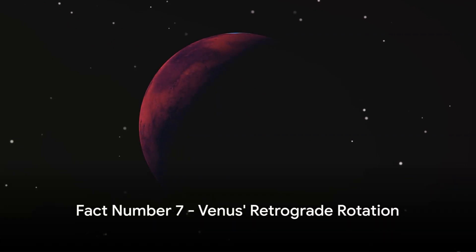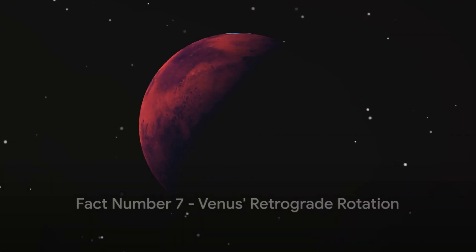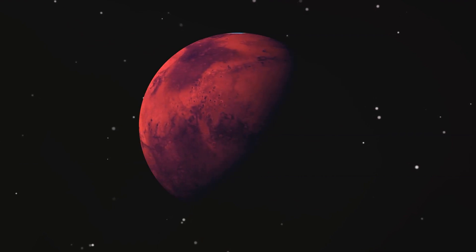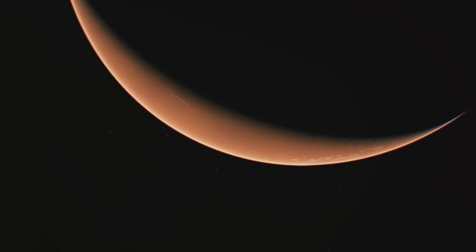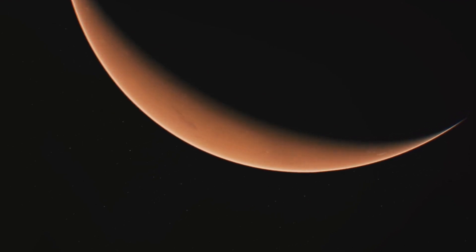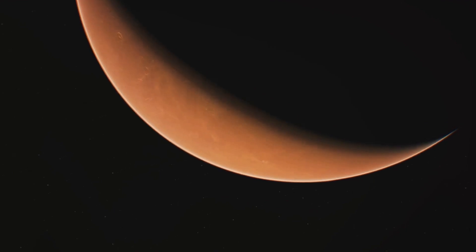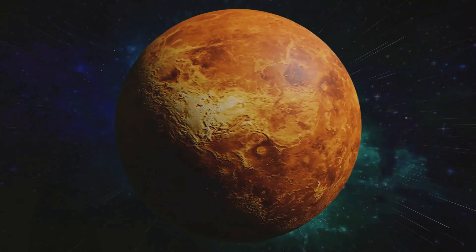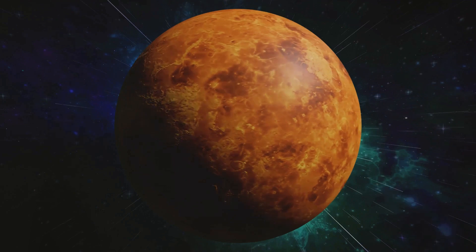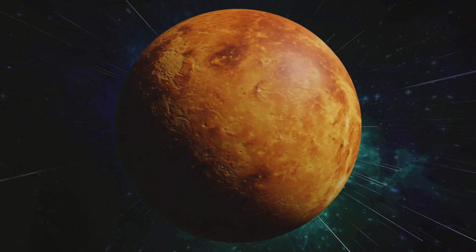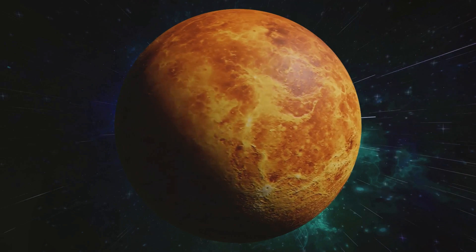Fact number 7 takes us deeper into Venus's peculiarities with its retrograde rotation. Now you may be wondering, what does retrograde rotation mean? In astronomy, most planets spin on their axis in the same direction they orbit the Sun, a motion we call prograde rotation. But Venus, ever the rebel, does the opposite. It spins in the opposite direction to its orbit around the Sun, a phenomenon known as retrograde rotation.